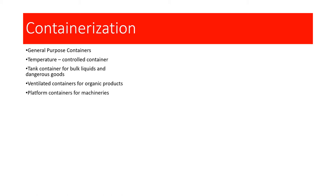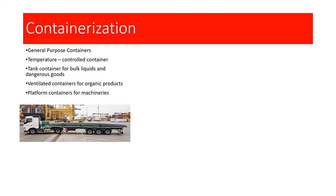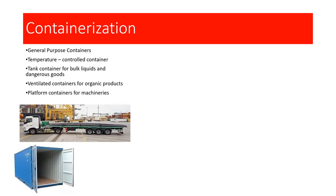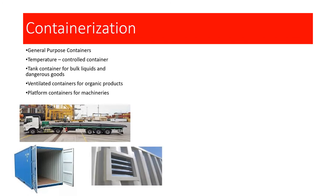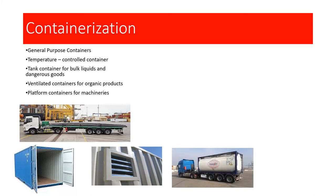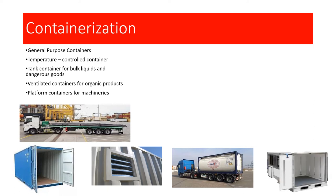Platform containers are used to transport heavy goods like vehicles — there is a large platform on which vehicles can be loaded and transported. These platform containers are most often found at ports. General purpose containers can hold anything except perishable goods. Ventilated containers are especially designed for organic products like vegetables and fruits. Tank containers hold bulk liquids, and temperature control containers have refrigeration facilities.